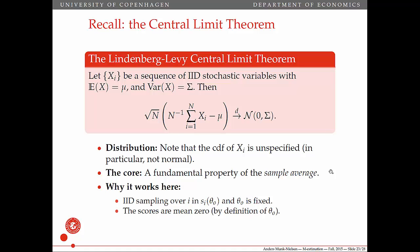Why does the central limit theorem apply in our case? We're going to assume IID sampling over i in the scores, so the data that gives rise to this i, and we keep theta naught fixed. Then all that's changing in that sample average is really just the data, which is IID. A function of a stochastic variable is itself a stochastic variable, and if the core stochastic element is IID, then the function becomes IID. The scores are mean zero by definition of theta naught, because here the expectation is zero — and the scores have mean zero.